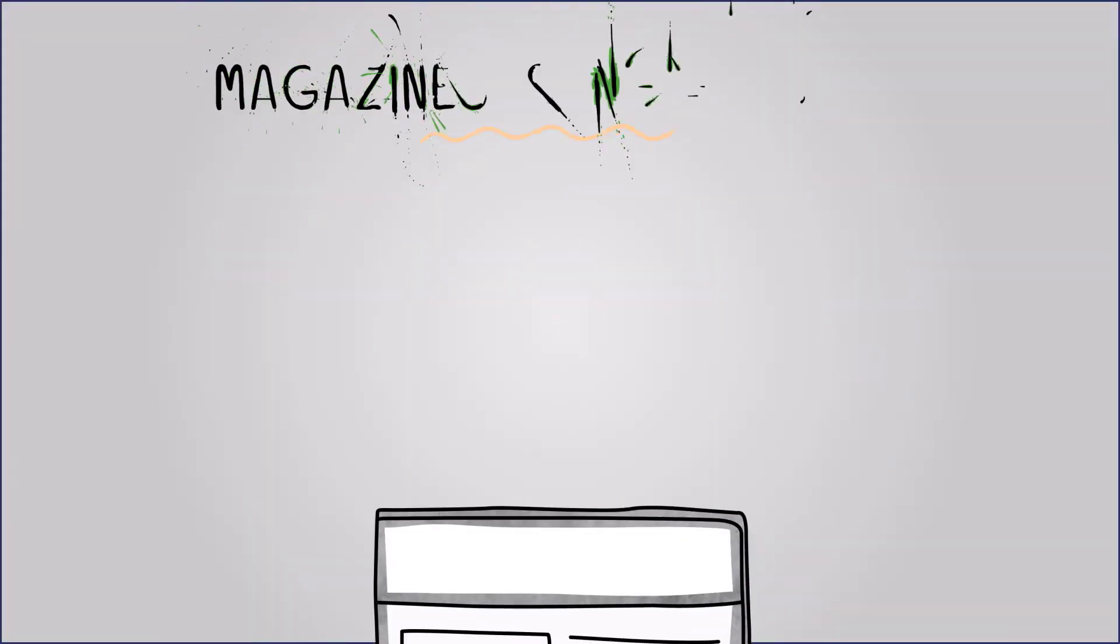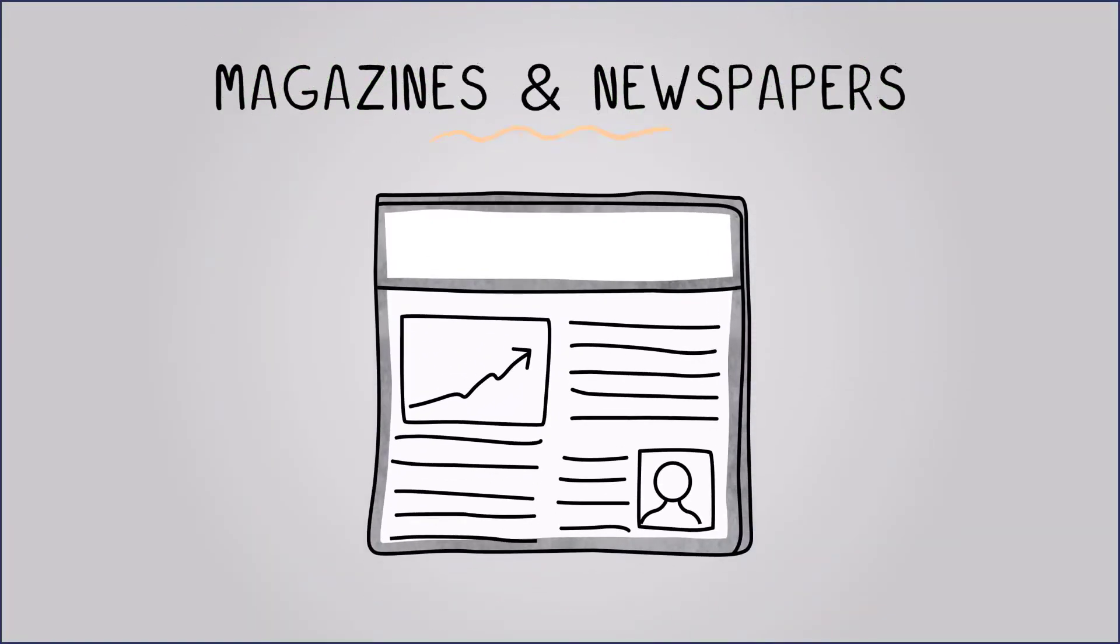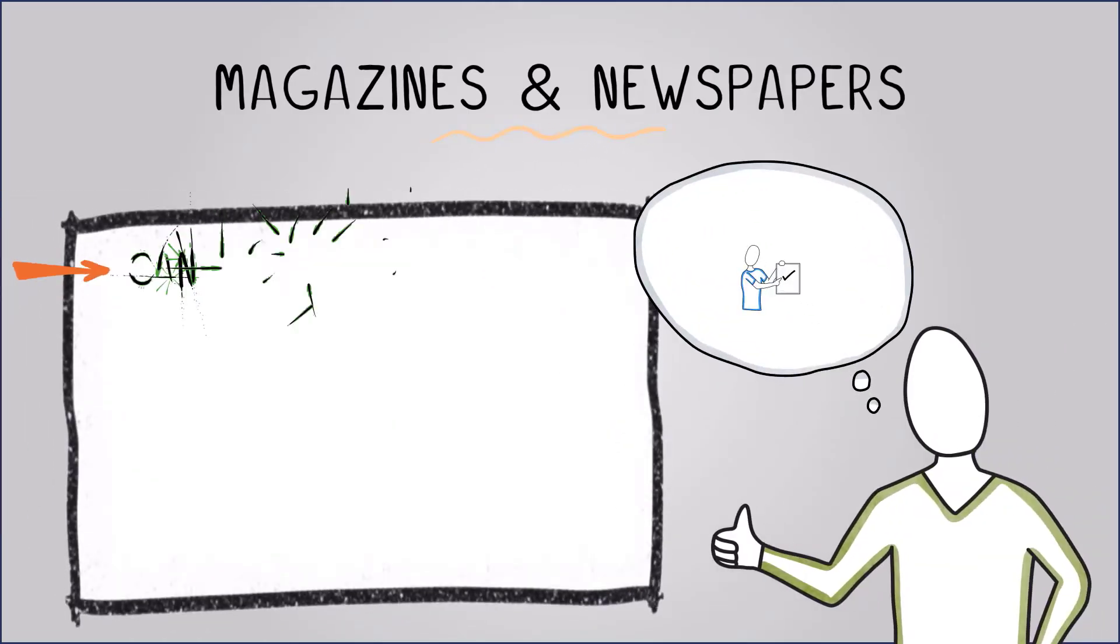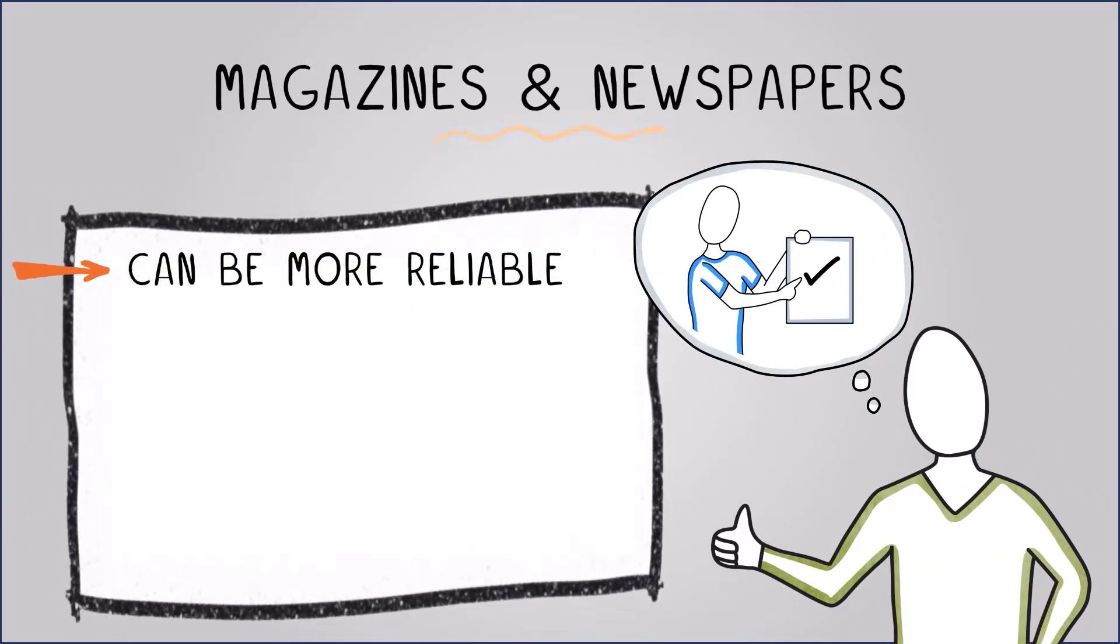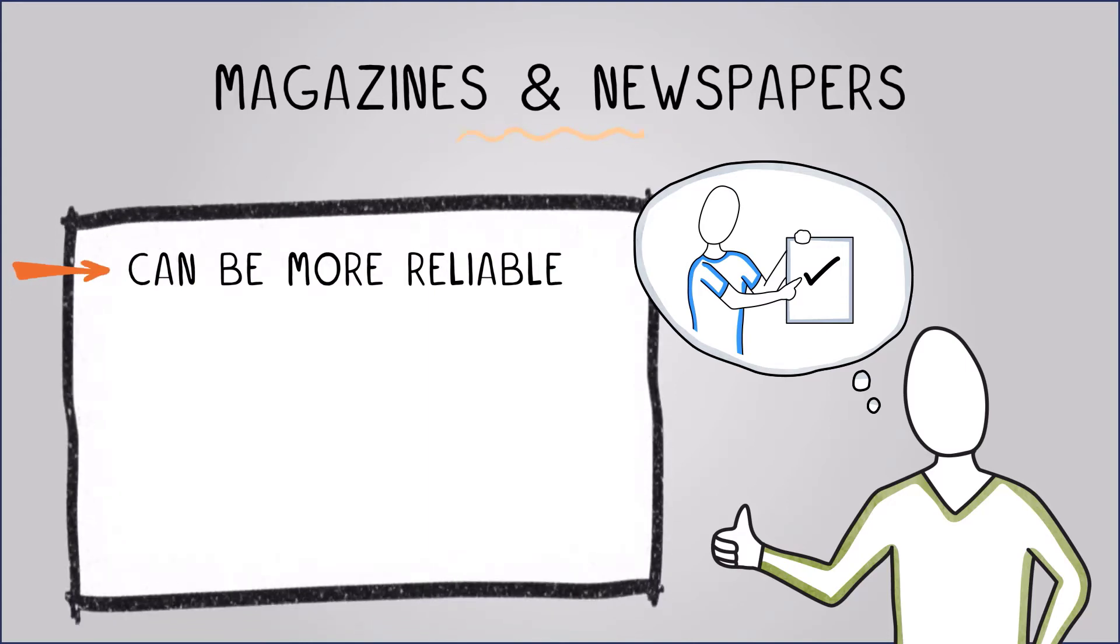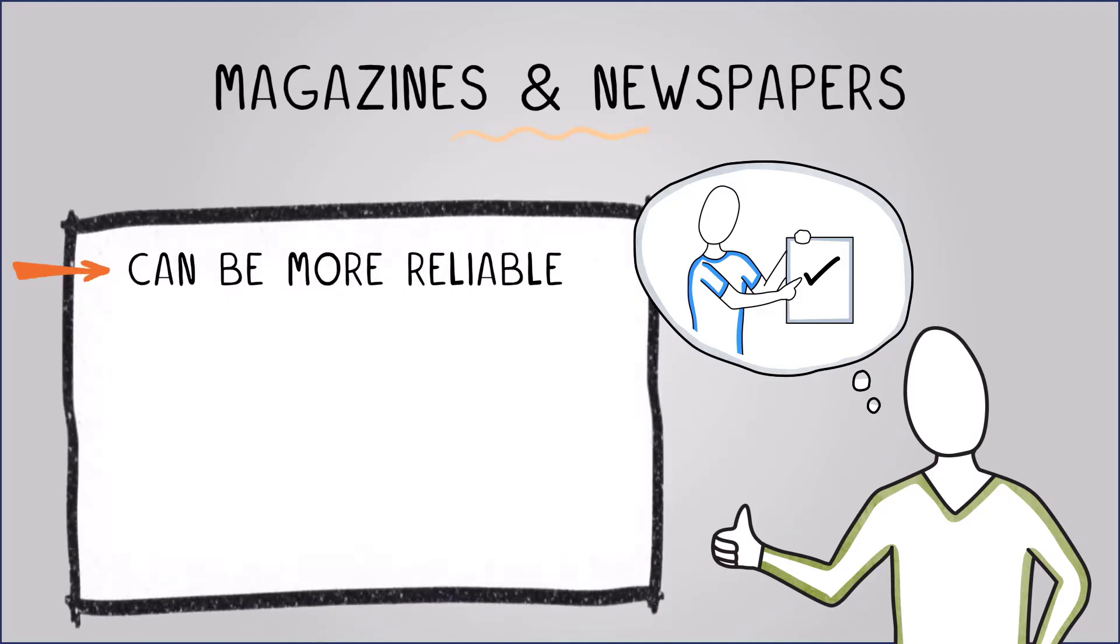Magazines and newspapers are another source of secondary research data. They can provide insights into current events, trends and public opinion. Advantages include that newspaper reporters often report truthful, honest and hard-hitting research data. Fact-checking is expected and so this can be more reliable.